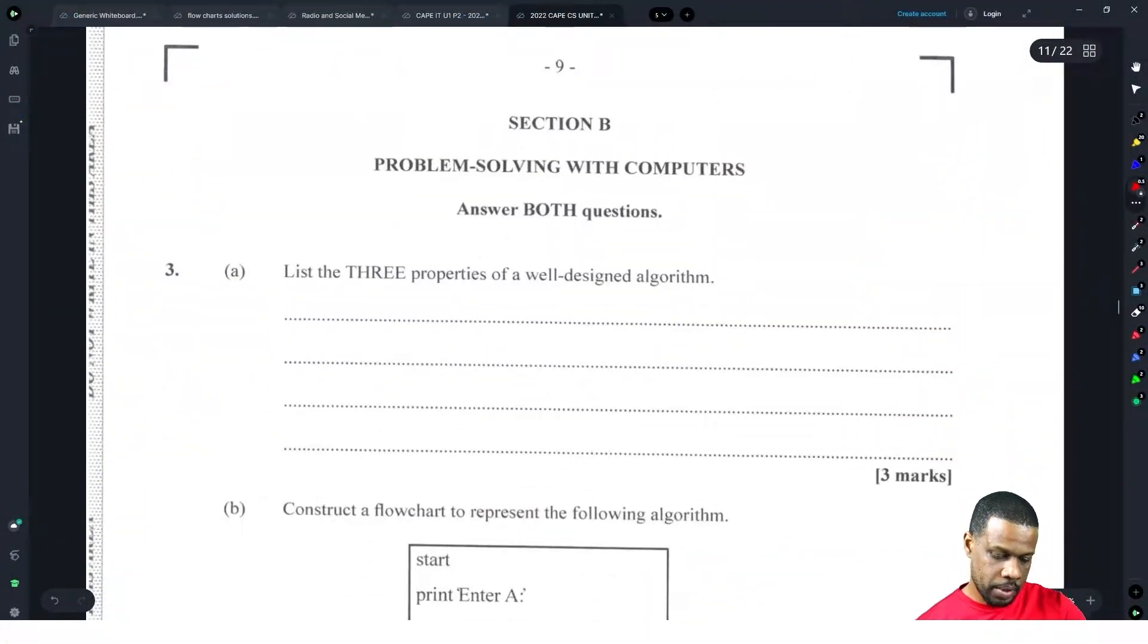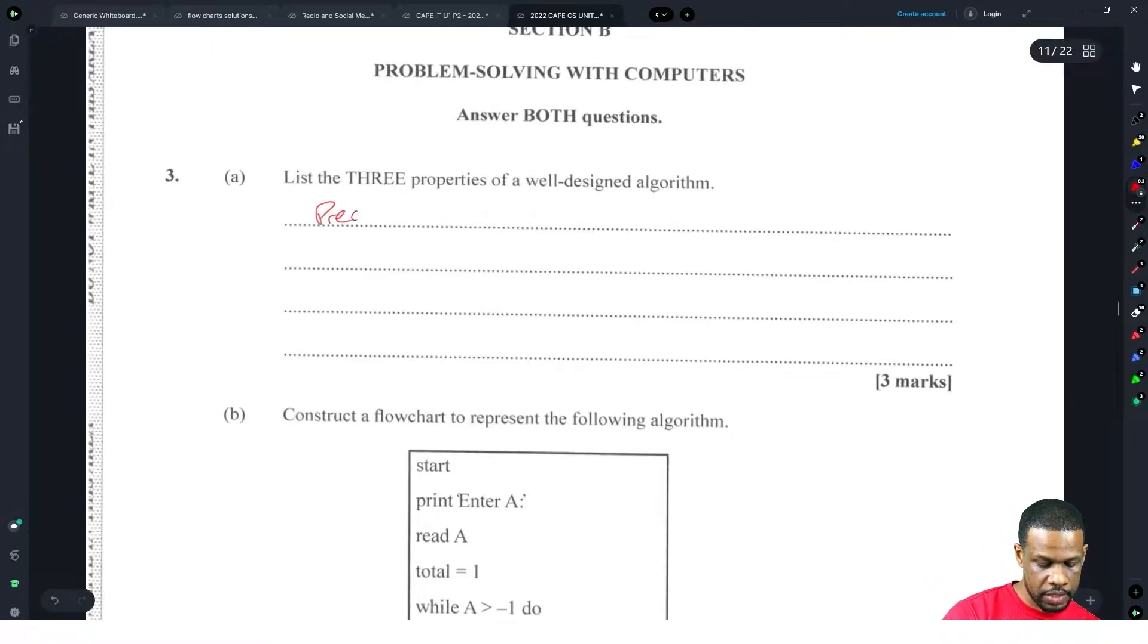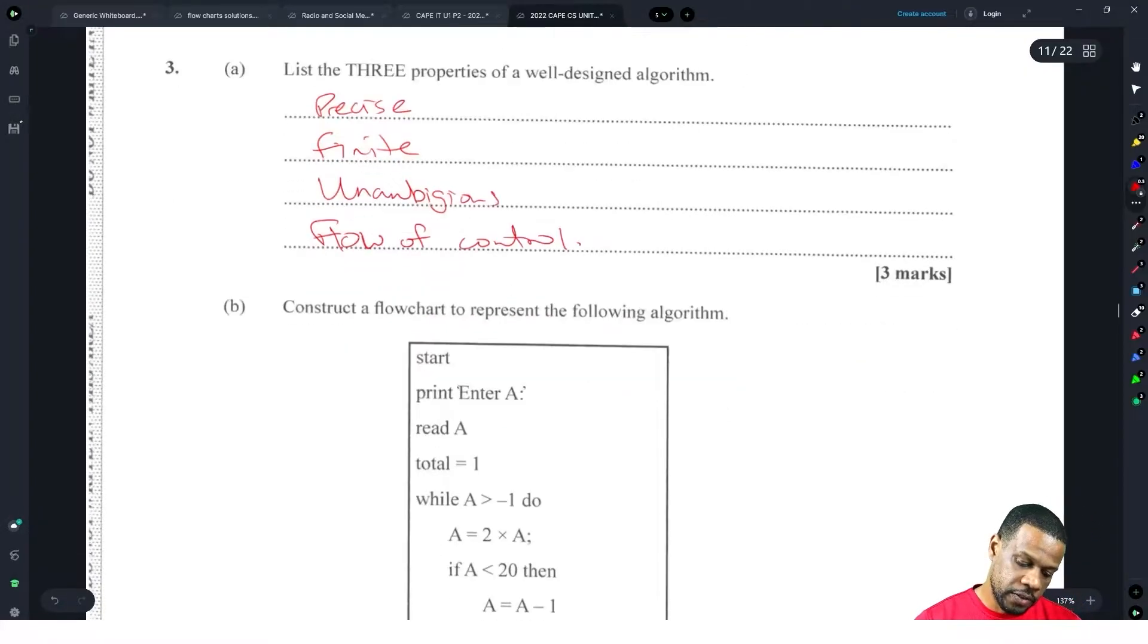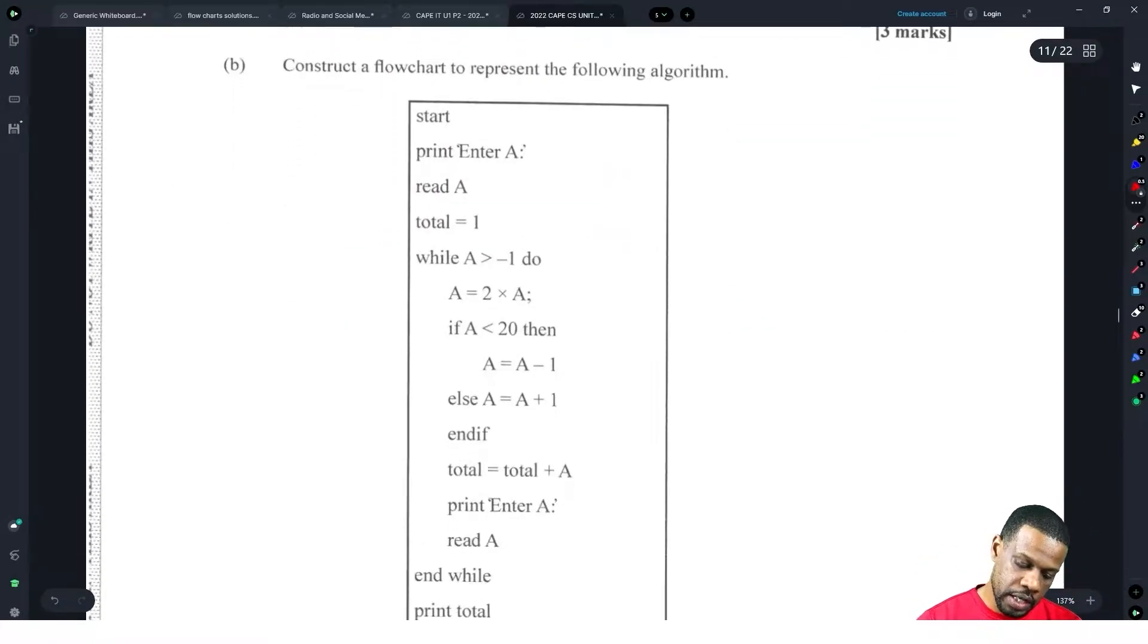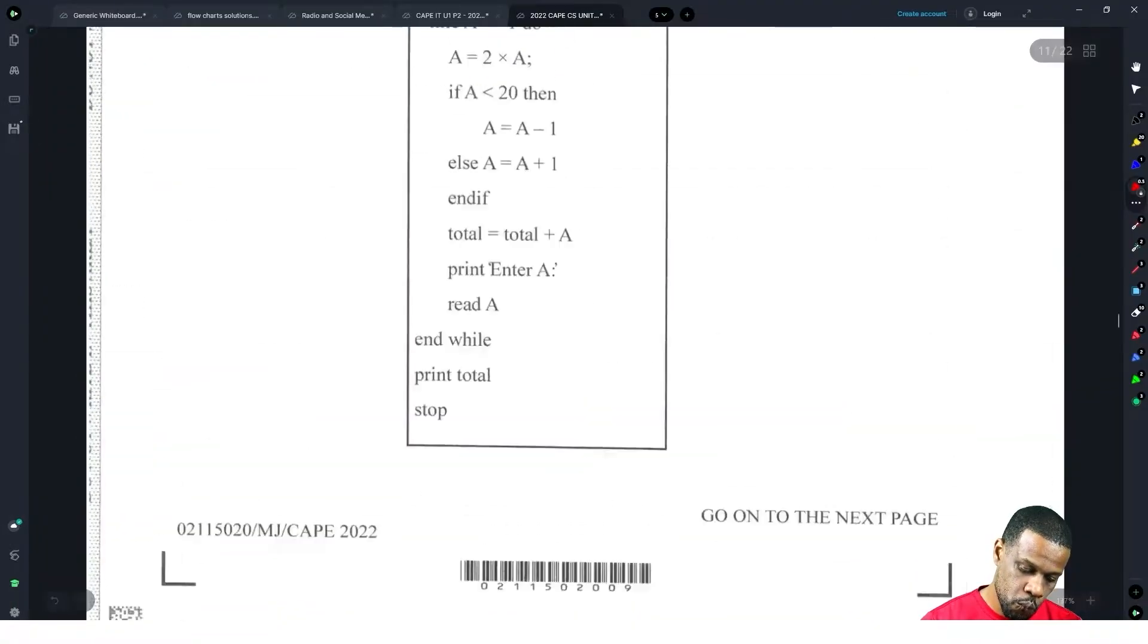Alright, so let's go problem solving on computers. Three properties are well designed algorithm: precise, finite, unambiguous. They want you to construct a flowchart to represent the following algorithm. Where do I construct the flowchart? In this big box here.